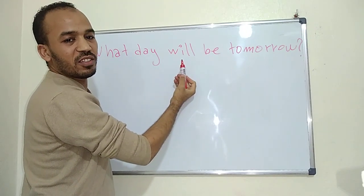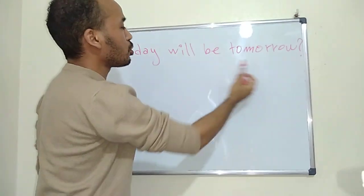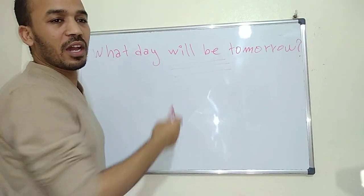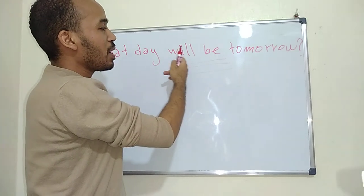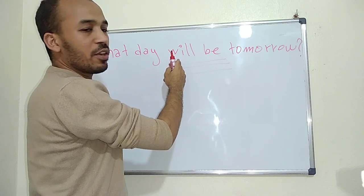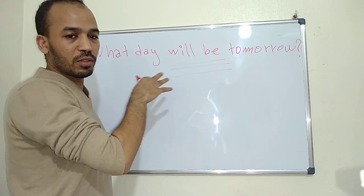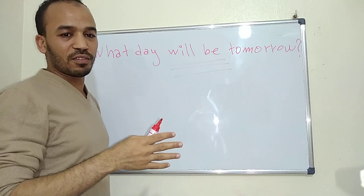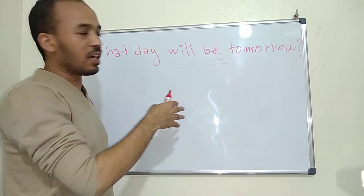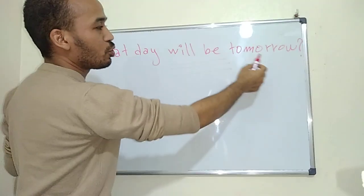You can see the verb 'to be' conjugated in the simple future. So 'What day will be tomorrow?' — this is a rule for forming questions about the future, using 'will' and 'be'. 'Will' is the auxiliary and 'be' is the verb. For beginners, I just want you to know this rule.